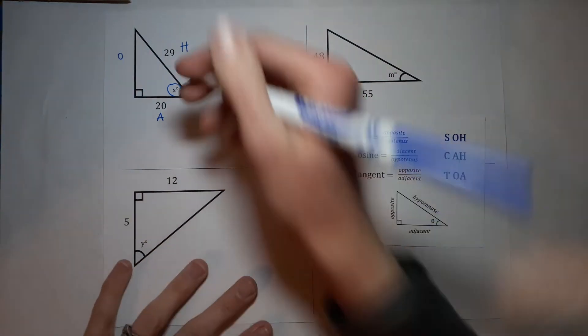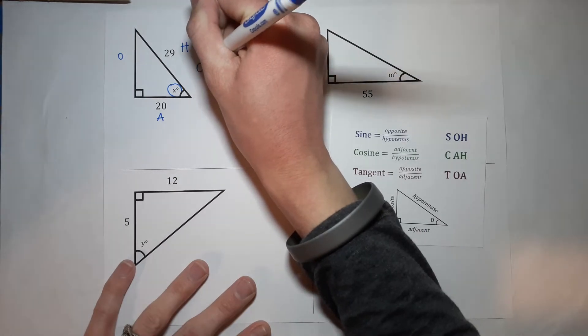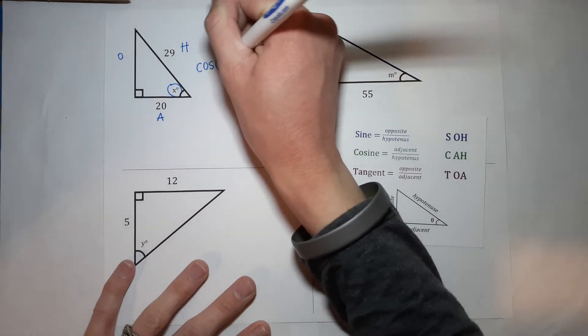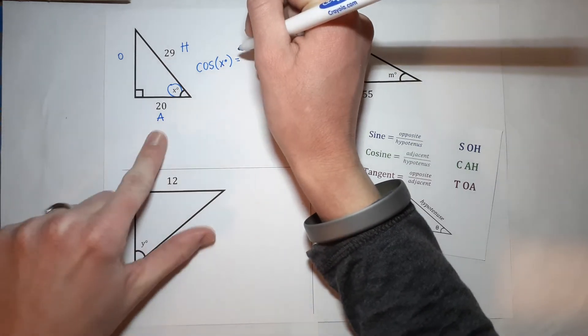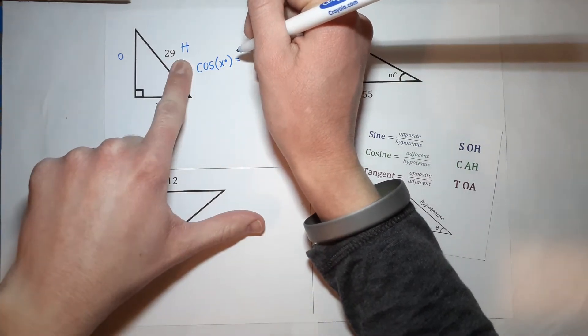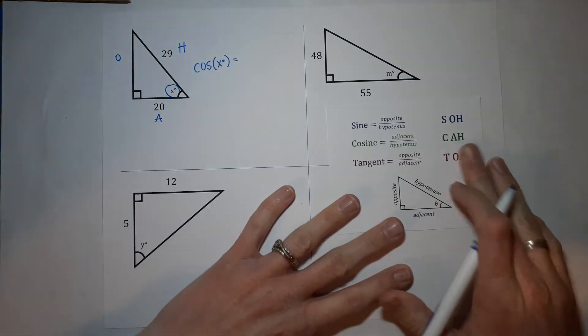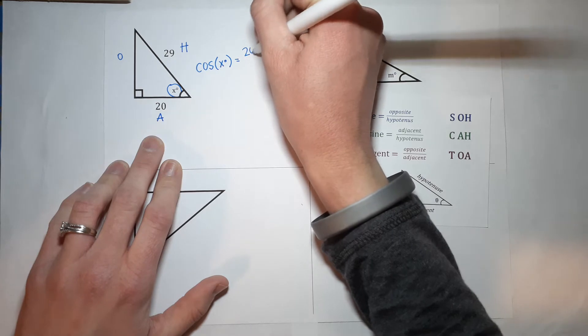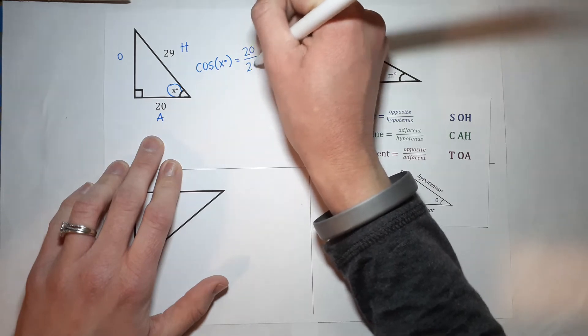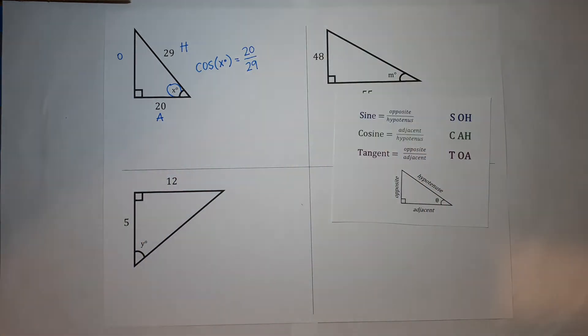Here's how we set this up. We know that the cosine of x degrees, whatever that is, is equal to adjacent over hypotenuse. Adjacent over hypotenuse gives me 20 over 29. So it's like now what?